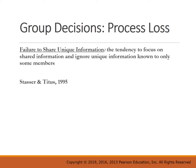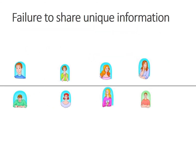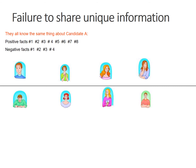There was research by Stasser and Titus in 1995 that studied student body president candidates. In order to pick the best candidate, groups needed to review both information they shared and information they didn't share. The dependent variable was which candidate was chosen. All members knew the same eight positive facts about candidate A and four negative facts about candidate A.